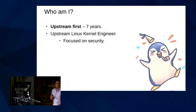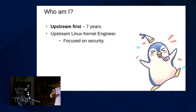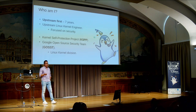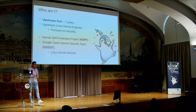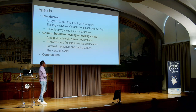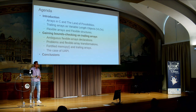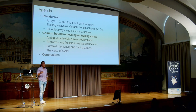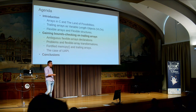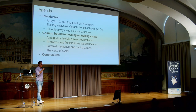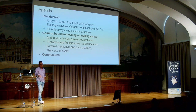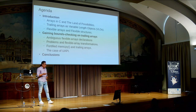For those that don't know me, I've been doing upstream kernel development for the last seven years. I've been mostly focused on security, and I collaborate with the kernel self-protection project, which is part of the Google Open Source Security team in the kernel division. This is the agenda for today: a quick introduction talking about arrays in C, trailing arrays, flexible arrays, and then the main part about gaining bounds checking on trailing arrays, and all the problems and implications of this work.